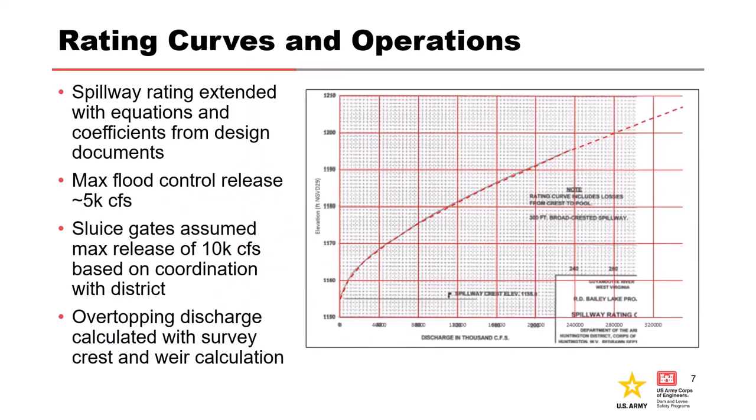Because we're dealing with an overtopping failure mode, we needed to extend the rating curves to account for higher pools beyond original design. We found equations and coefficients from the original spillway design and used those to extend the spillway rating curve. According to the water control manual, the max flood control release is 5,000 CFS.